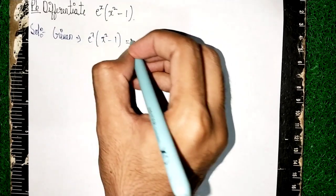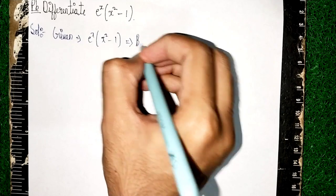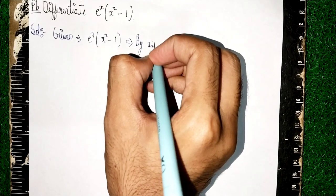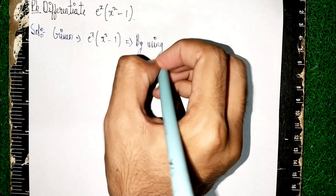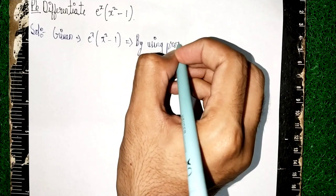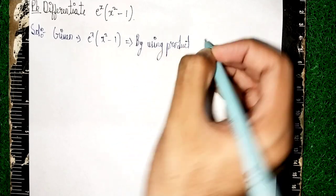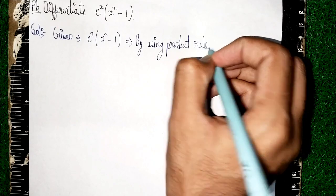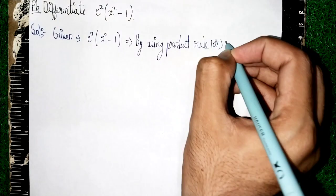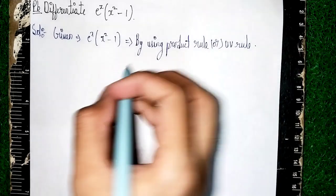Now I am using here product rule. By using product rule or uv rule or uv rule. Both are same.